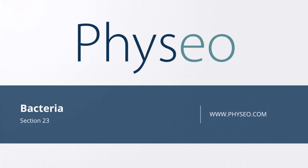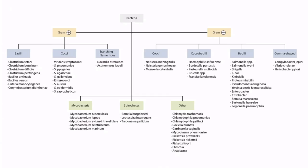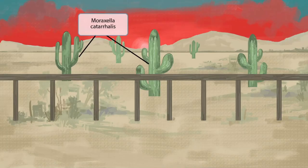Welcome to section 23 of Bacteria. This is our bacteria overview figure, and in this video we'll be discussing Moraxella catarrhalis. This scene will take place out in the desert near some cacti. Cactus sounds kind of like catarrhalis, so we've shown several cacti in the image to help you remember that this image is about Moraxella catarrhalis.